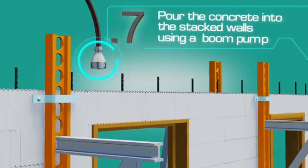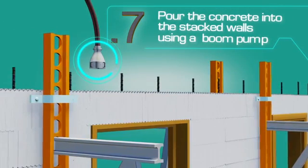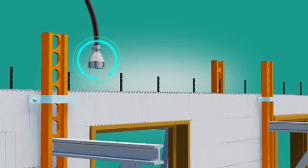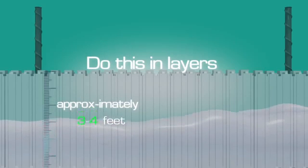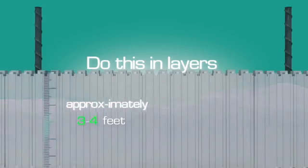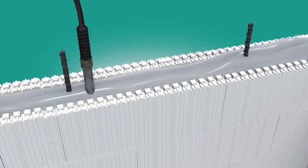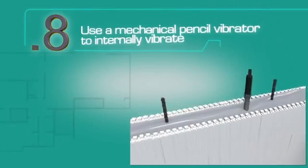Pour the concrete into the stacked walls using a boom pump. Do this in layers, approximately three to four feet at a time, circling the structure until the top of the wall is reached. Next, use a mechanical pencil vibrator to vibrate the concrete and remove all air pockets within the wall.